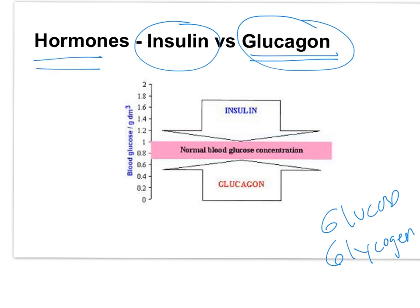Insulin and glucagon are hormones — chemical messengers in the blood. These two hormones work antagonistically to each other. Just like antagonists work against each other in literature, so do insulin and glucagon. Insulin is going to decrease the blood glucose level, and glucagon acts to increase the blood glucose level, keeping blood glucose in homeostasis.